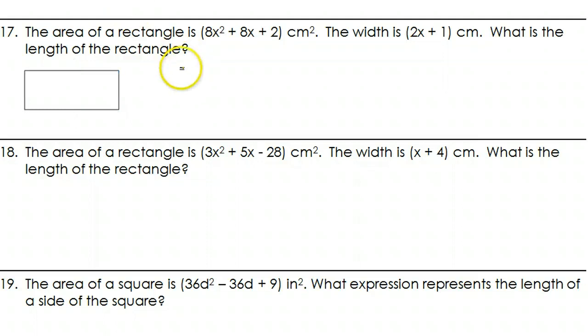So here's a rectangle. They're saying that the area is 8x² + 8x + 2. But we know that area equals length times width. So this looks like a job for factoring. Because if I take that area and I factor it, it should factor down as length times width. And it's even easier than that because they already gave us the width.